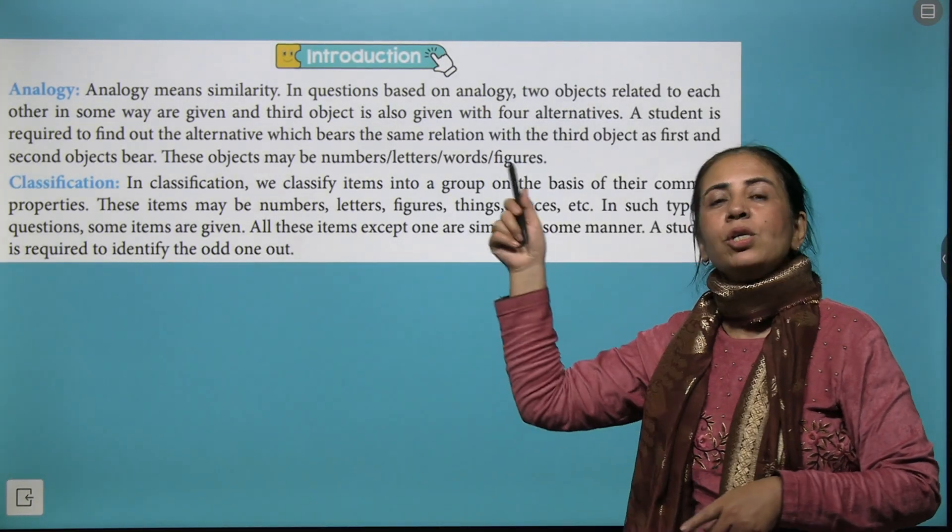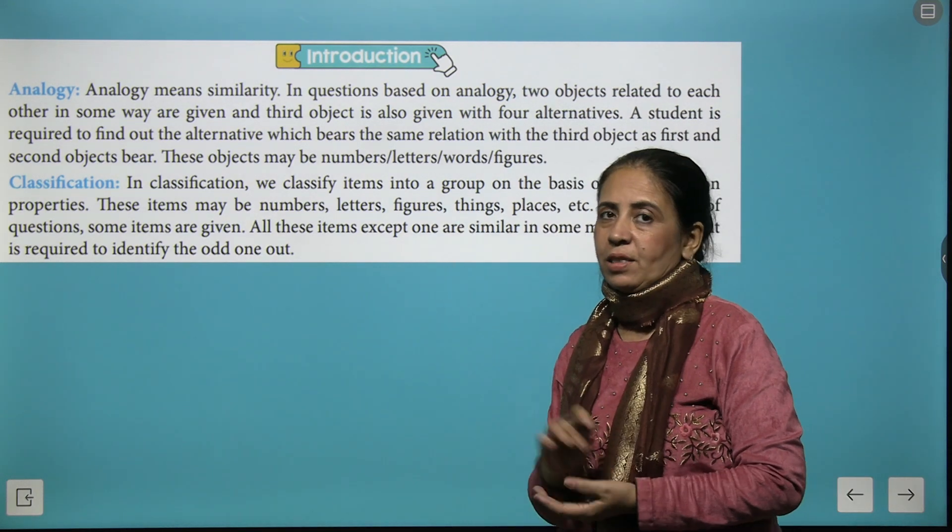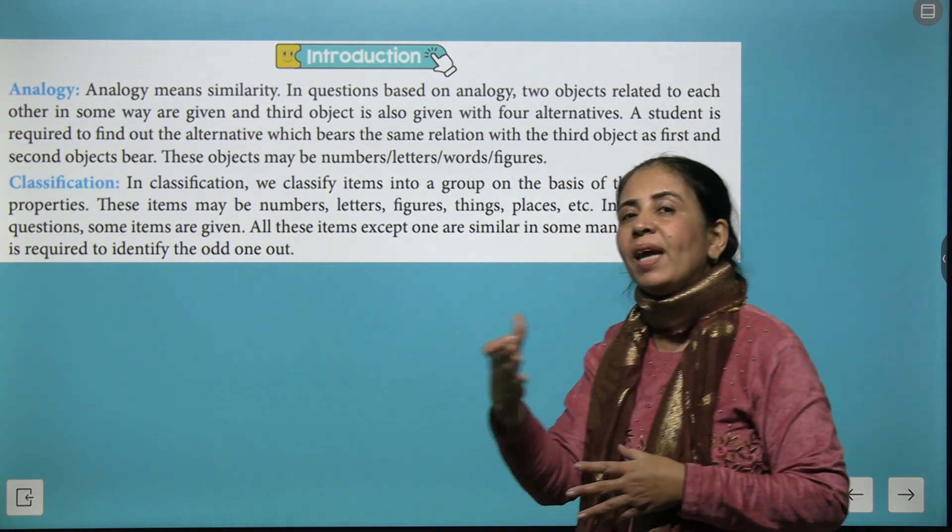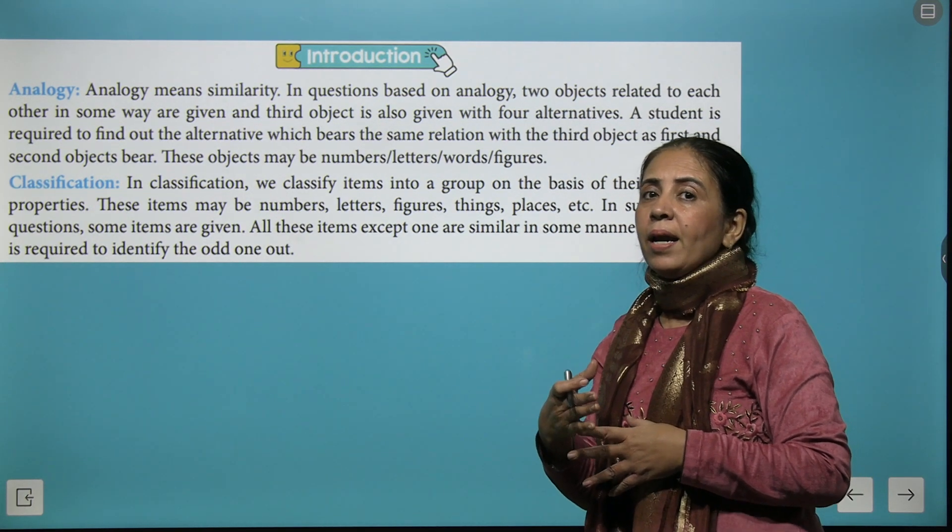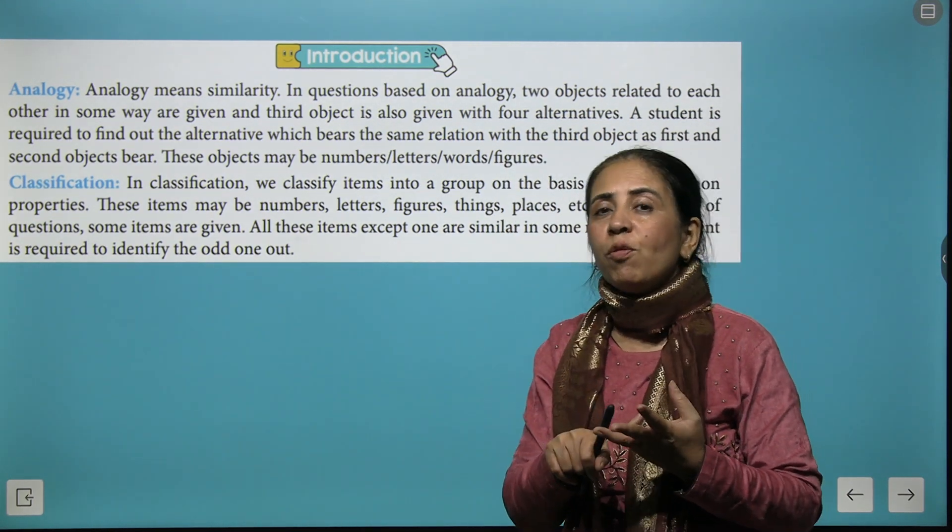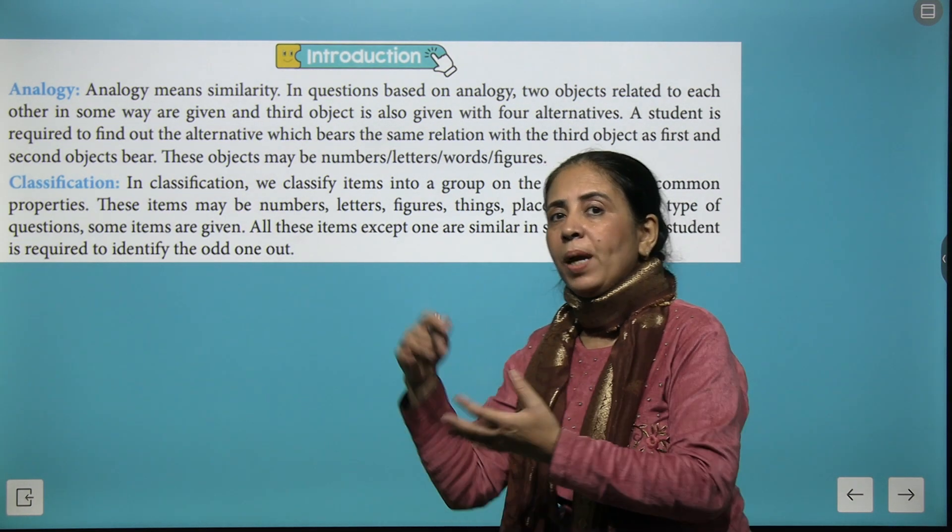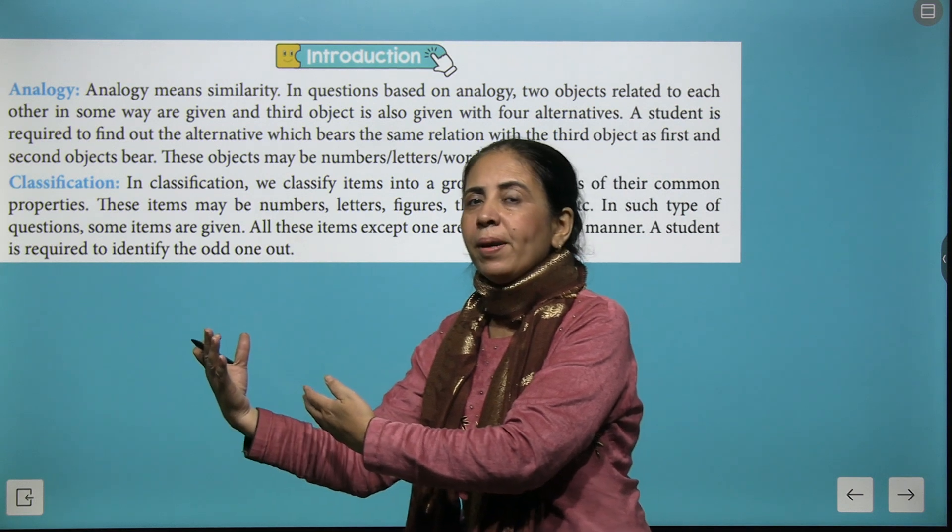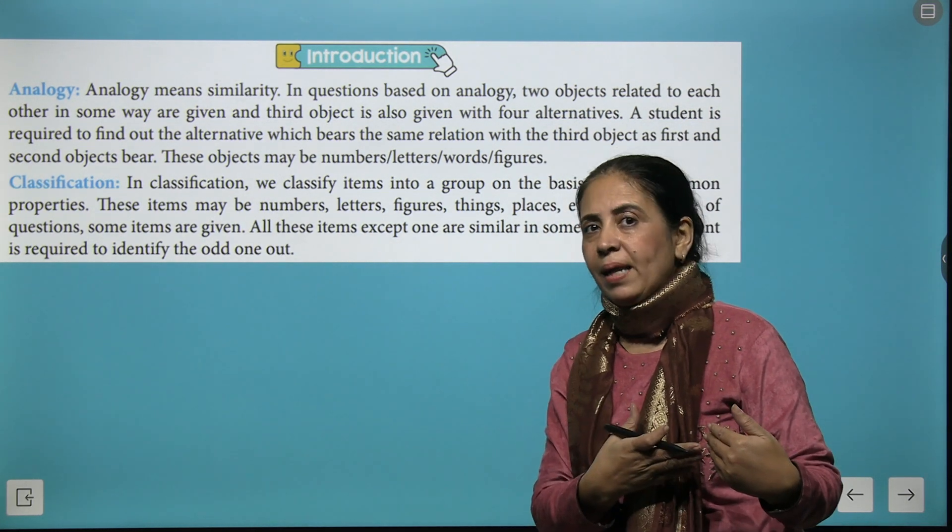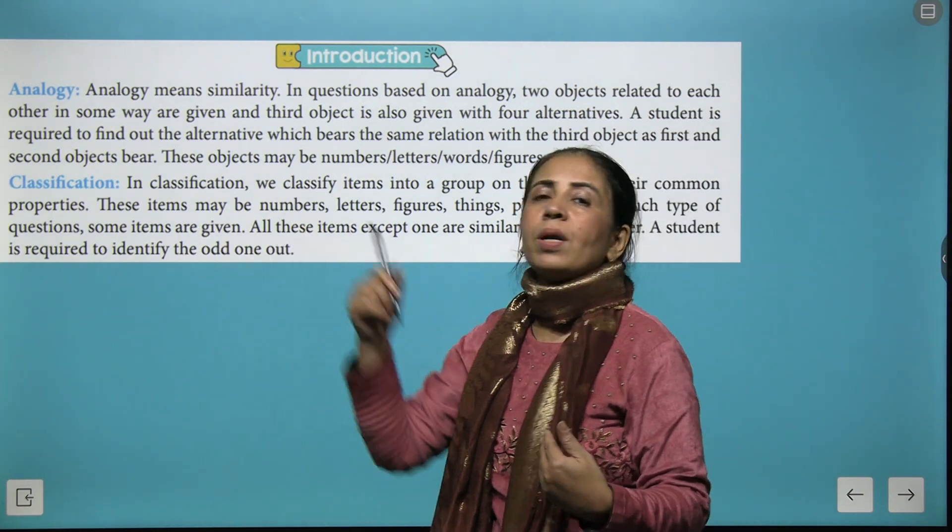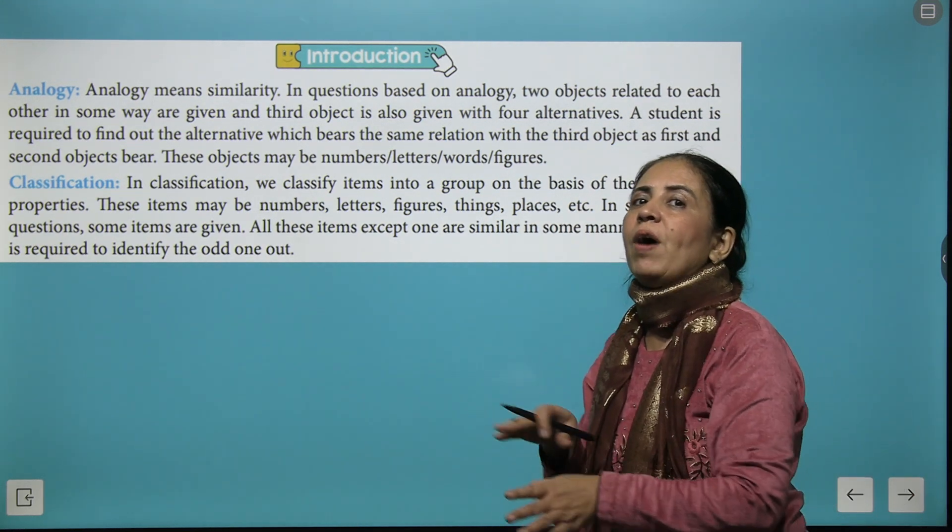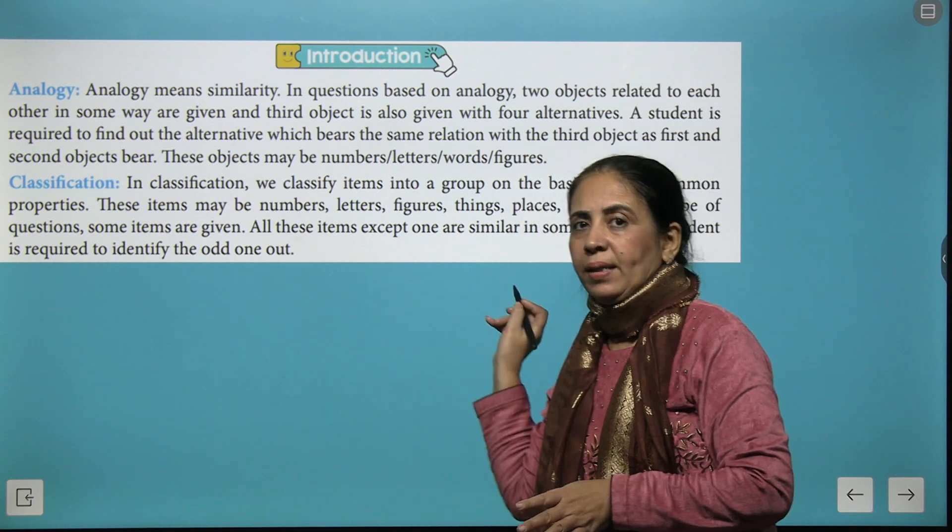Moving ahead we talk about how analogy and classification differs. So analogy actually means similarity. We have to create a relation of similarity and it could be in form of alphabets, numbers, sometimes in form of words or even shapes. We have to create the relation of the first combination and then complete the second combination following the same pattern and similarity. But when you talk about classification here we classify items into groups and we have to find what is the odd one out and that gives you the answer.